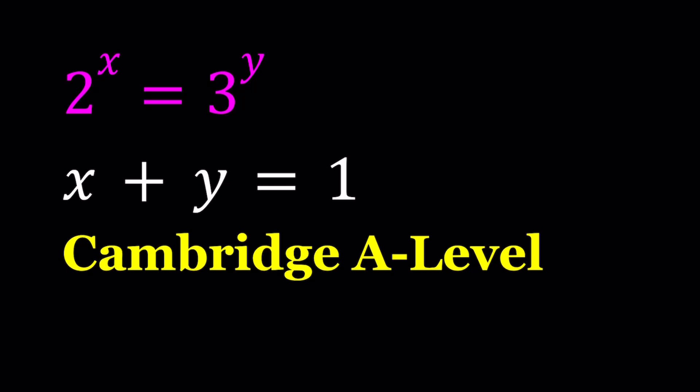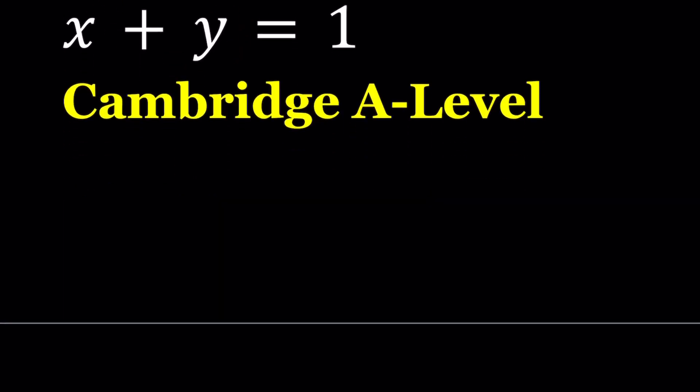We have 2 to the power x equals 3 to the power y, and x plus y equals 1. So this is a system in two variables, and we're going to be solving for x and y values. I'll be presenting three methods. Let's start with the first one.